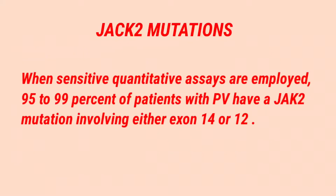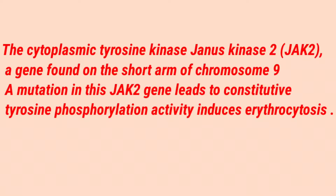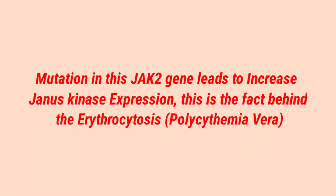Another very important finding is the JAK2 mutation, seen in 95 to 99 percent of polycythemia vera patients. JAK2 encodes a cytoplasmic tyrosine kinase — Janus kinase — whose gene is found on the short arm of chromosome 9. This mutation results in proliferation of erythrocytes without erythropoietin, due to increased Janus kinase expression.